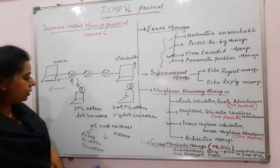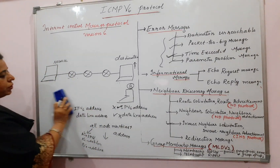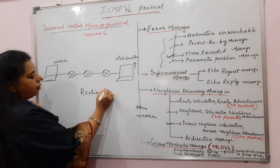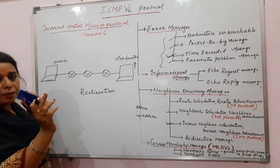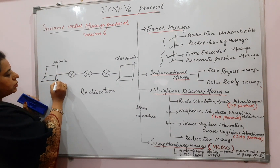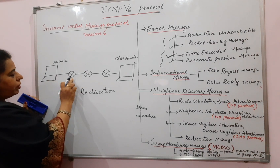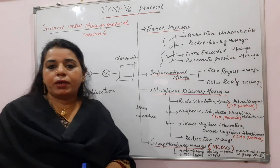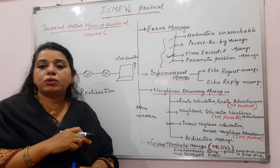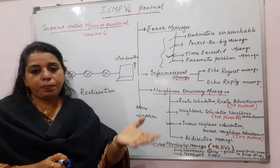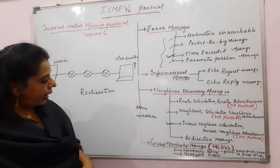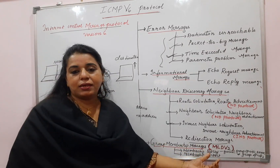The last message under neighbor discovery is the redirection message, which also existed in ICMPv4. If a host sends a packet to the wrong router instead of the default router, that wrong router redirects the message to the correct router and also sends a message to the source host informing it to send future packets to the correct router. This is called the redirection message.